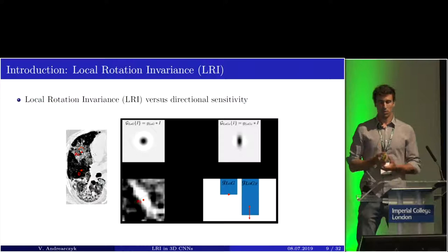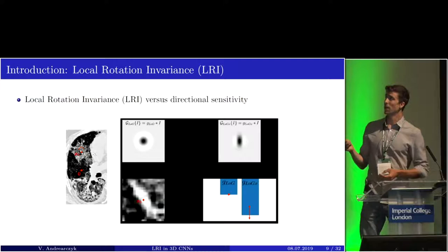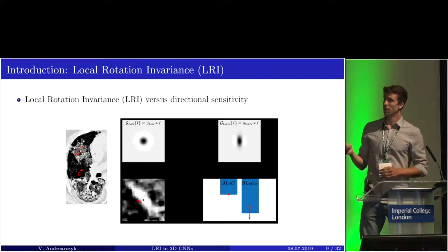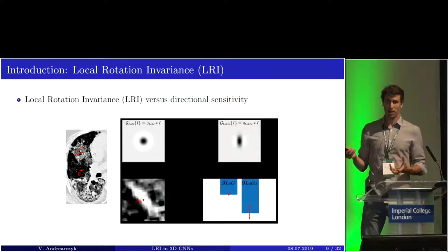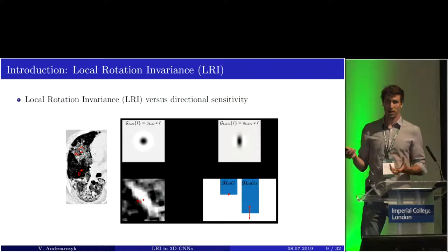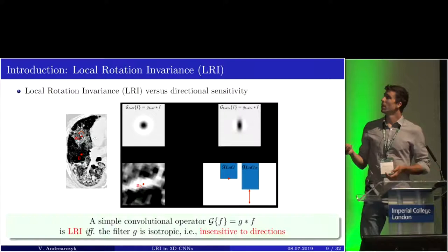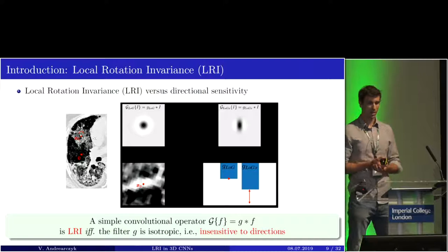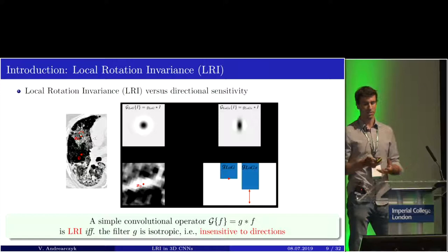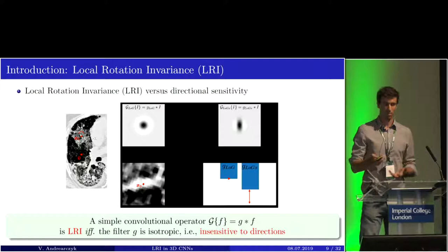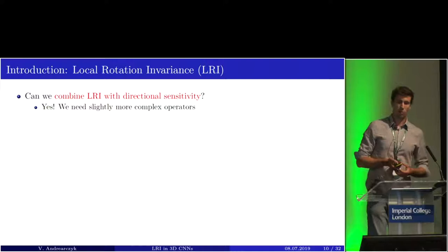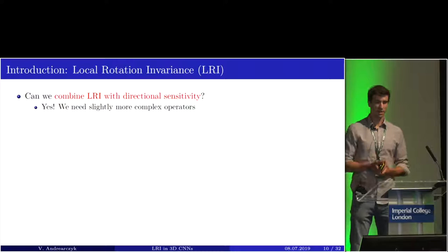When we look at local rotation invariants with convolutional filters, we have two filters: one that is isotropic and one that is directional. When we rotate the image around a point X0, the isotropic filter is invariant — it is locally rotation invariant. But the directional filter misaligns with the input, so it is not invariant. A single convolutional operator is locally rotation invariant only if the filter is isotropic — insensitive to direction. This is a problem since we need to detect edges and complex objects. So the question is: can we combine local rotation invariants with directional sensitivity? The answer is yes, but we need slightly more complex operators.